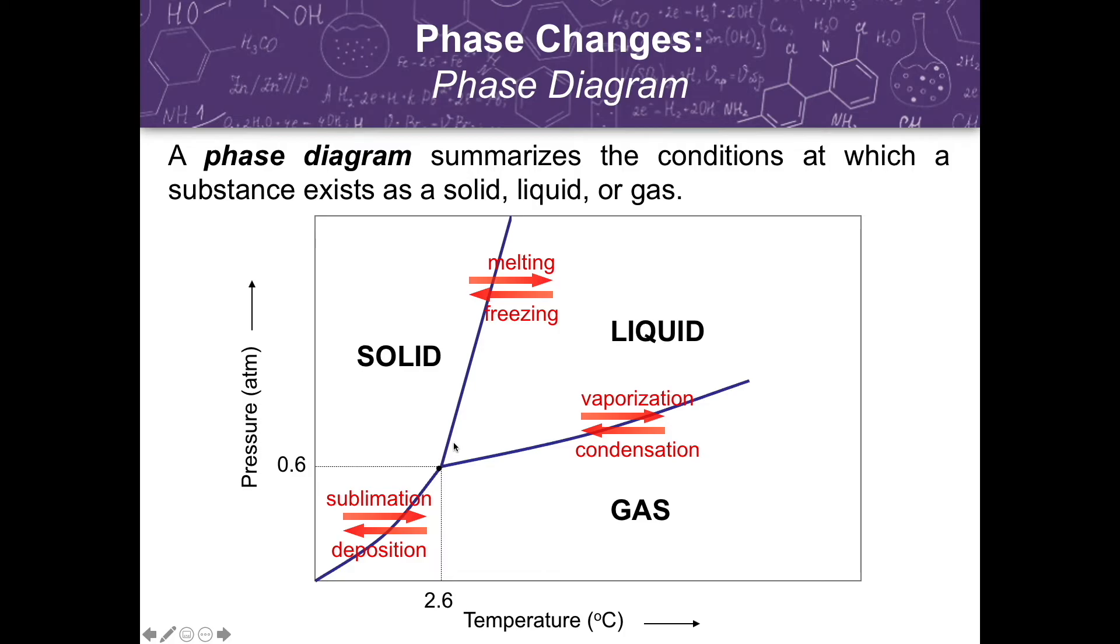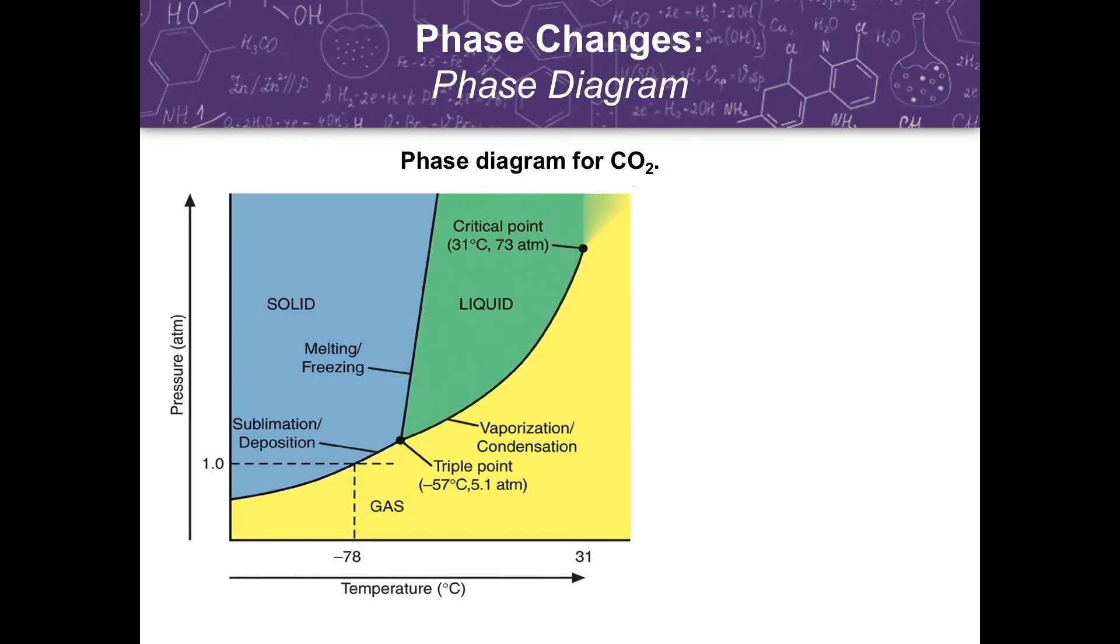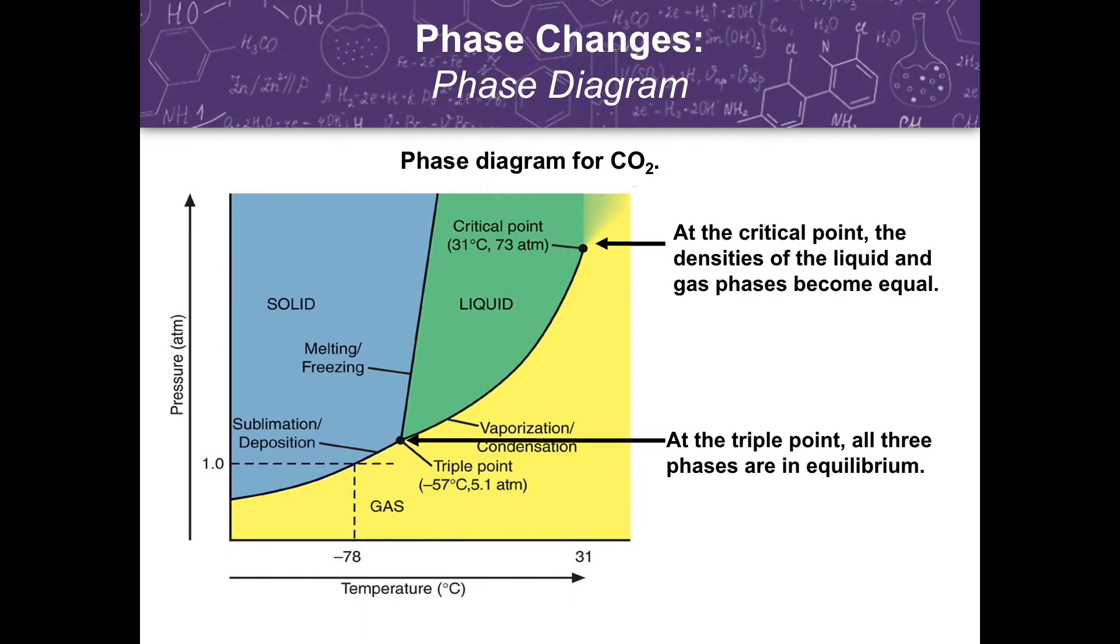We also have what you call the triple point, where the substance is existing in three phases at once. And we have the critical point at which the densities of the liquid and gas phases become equal. At this critical point, the substance is considered a supercritical fluid. As I have said earlier, at the triple point, all three phases are in equilibrium.